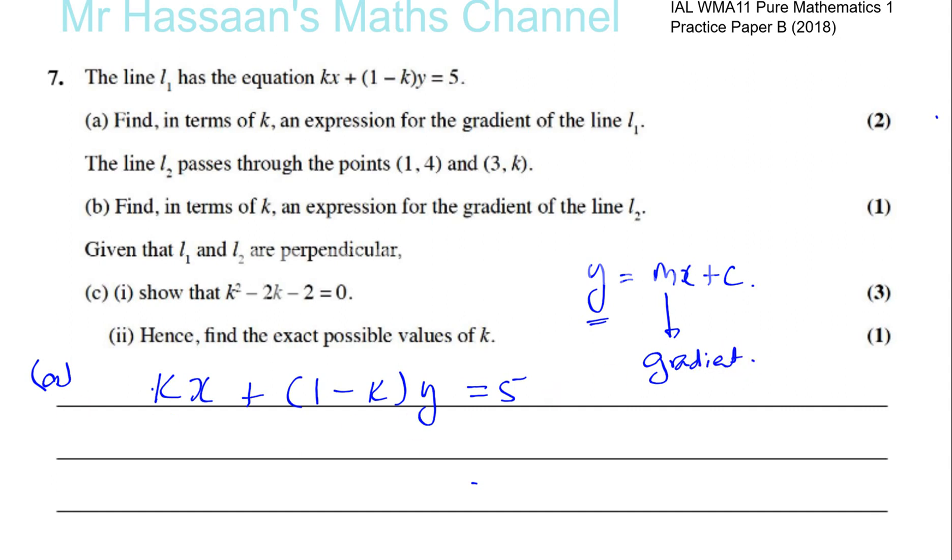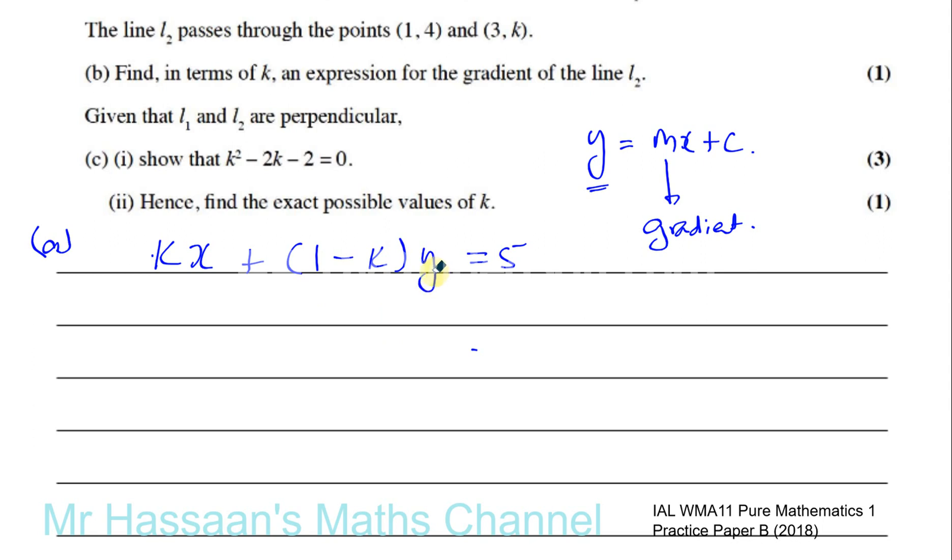So basically the simplest way to deal with this is just to make Y the subject of this equation. So first of all, let's get rid of this Kx. So we have (1 minus K) times Y equals, I'll write the Kx in the beginning because we want to make it clear in MX plus C form. So minus Kx and plus 5. Then I'm going to divide by (1 minus K). Because I want to have separate terms, I'm going to divide each term separately by (1 minus K). So I'll have minus K divided by (1 minus K) times X plus 5 divided by (1 minus K).